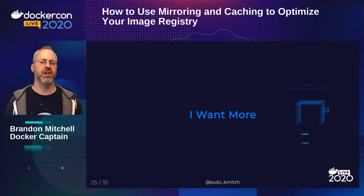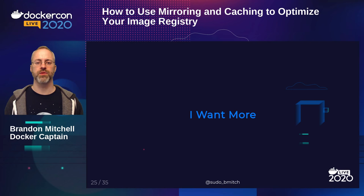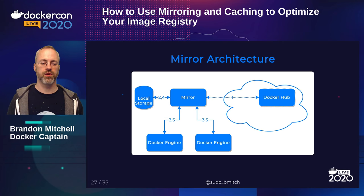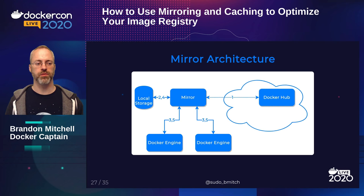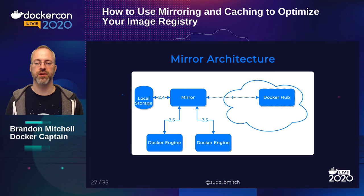If you want more control — avoiding cached credentials, preventing upstream changes from breaking your environment, or protecting against someone changing a version tag — you need mirroring. The architecture is similar but reversed: instead of a pull-through cache, you have a mirror that you manually populate first by pulling, re-tagging, and pushing images to it. Before that population step, any Docker engine querying the mirror gets an image-not-found error.